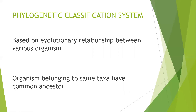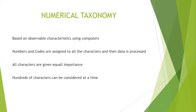The phylogenetic system of classification is based on evolutionary relationships between various organisms, and it says that organisms belonging to the same taxa have a common ancestor.